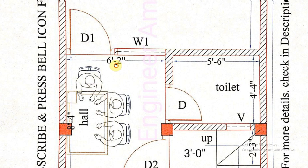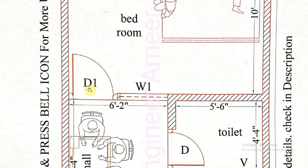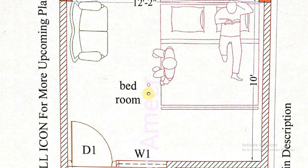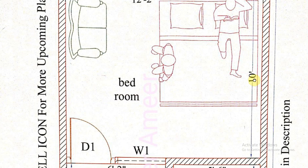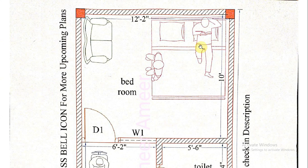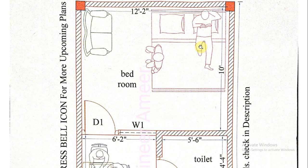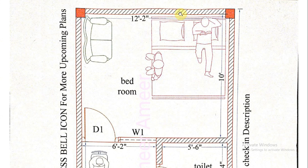Now we will enter in our bedroom. Bedroom size is 12 feet 2 inches from this wall to this wall, and the other direction 10 feet. I placed here one bed — bed size is 6 feet by 6 feet.